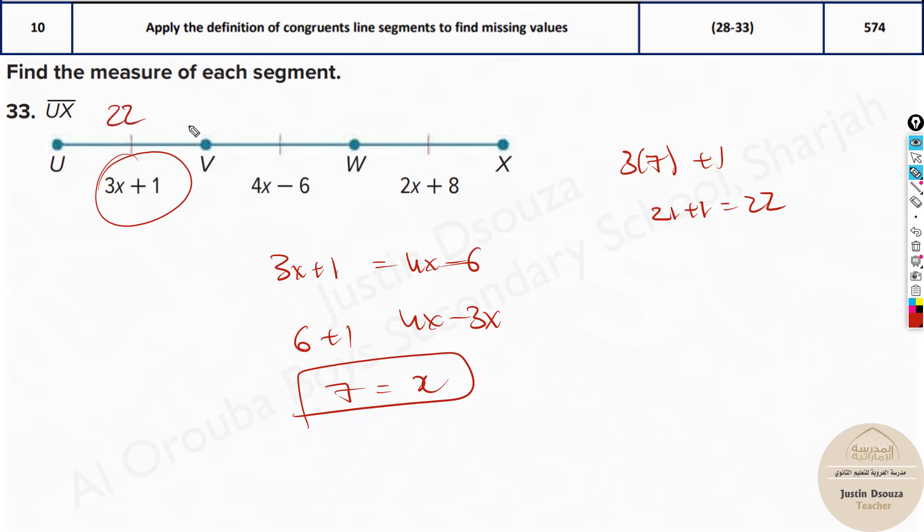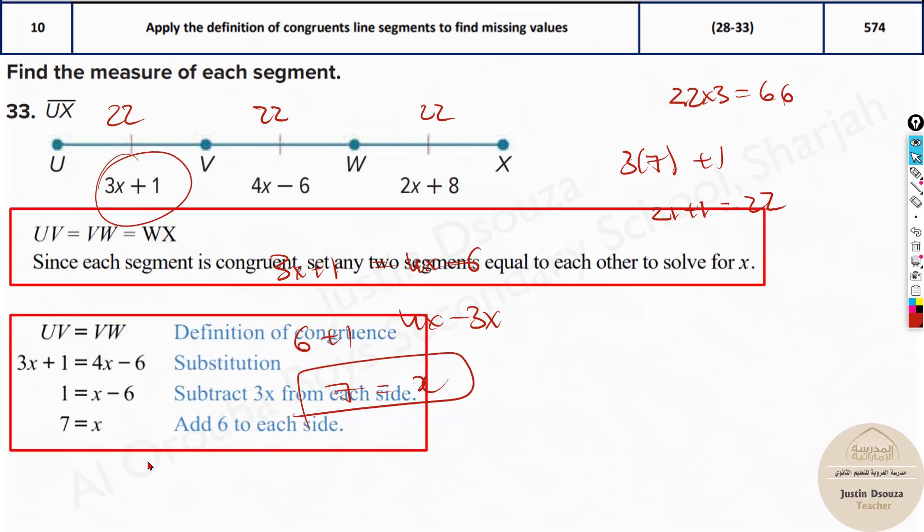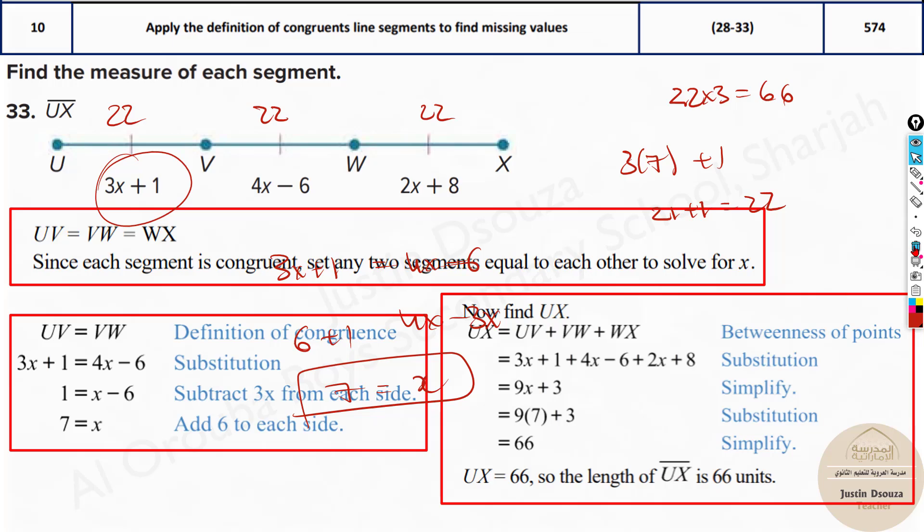So I'll just write over here 22. This is also equal congruent 22, 22. So you can directly do 22 times 3. That is 66. That is the total measure of U to X. So 66 is the final answer. 66 units.